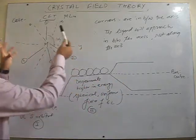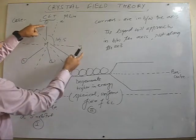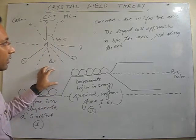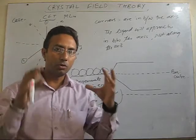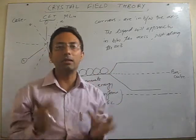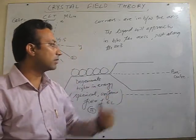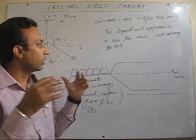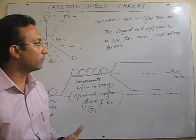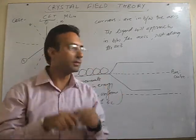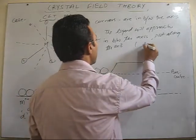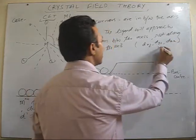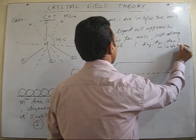So in case of tetrahedral field, when the ligands approach from the direction which is in between the axis, we find that only those orbitals having electron density in between the two axes will suffer more repulsion. Those having electron density along the axis will not suffer much repulsion, but those having electron density in between the axes — here we have dxy — these are the orbitals which have electron density in between the axes.